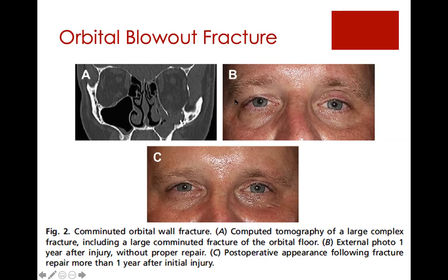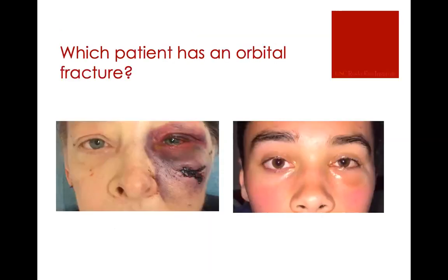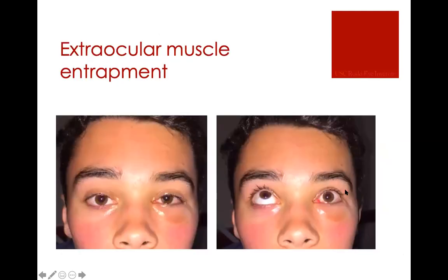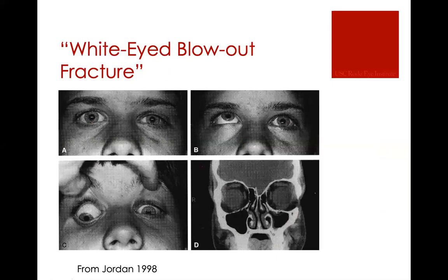It's not always obvious that a patient has an orbital fracture — some patients appear much more bruised, but children in particular often don't come in with that appearance. This is known as a white-eyed blowout fracture. Once you look at motility, you realize something is not normal. In pediatric fractures, you always worry about extraocular muscle entrapment. Entrapment specifically means there's a pediatric greenstick fracture that closed again like a trapdoor — so on the scan there's no open fracture, but muscle tissue is stuck in this trapdoor that has swung shut again.